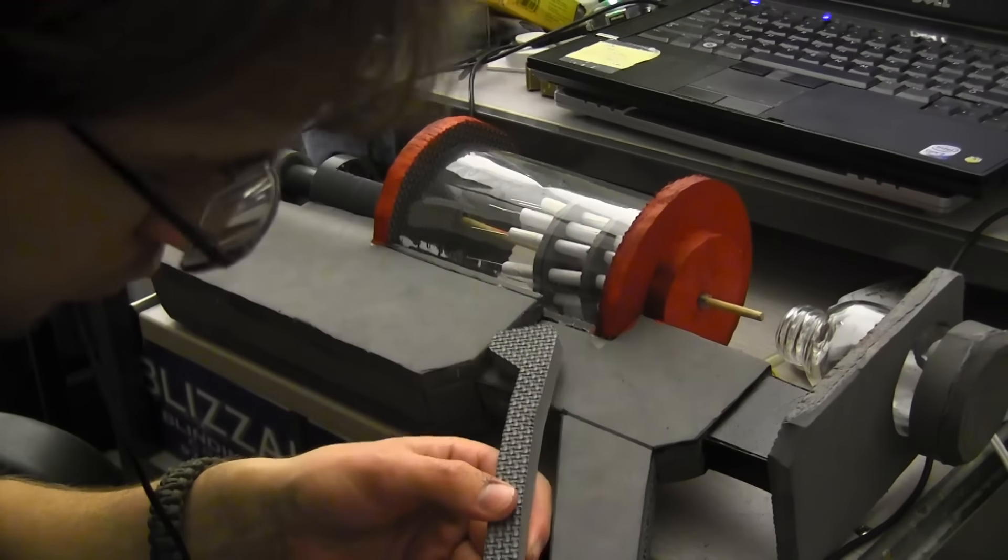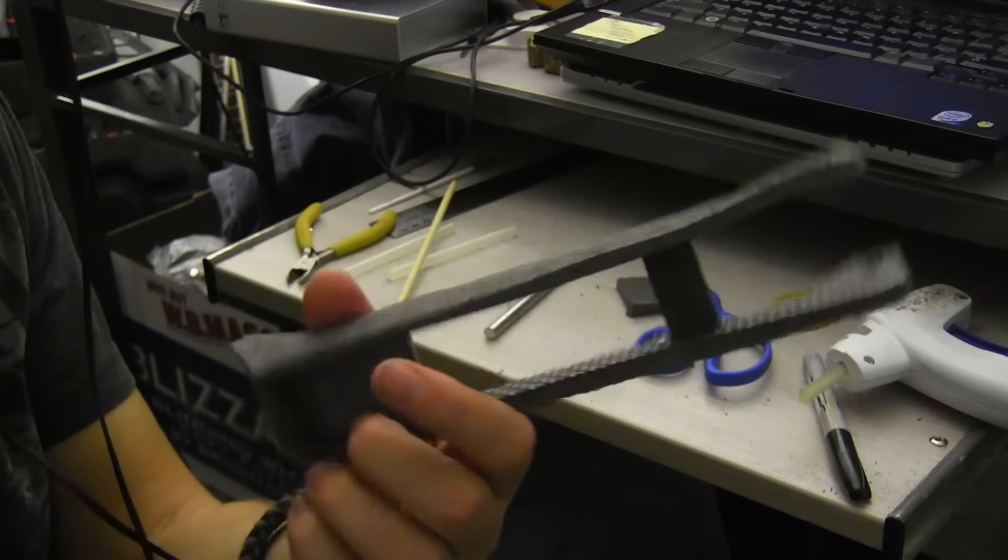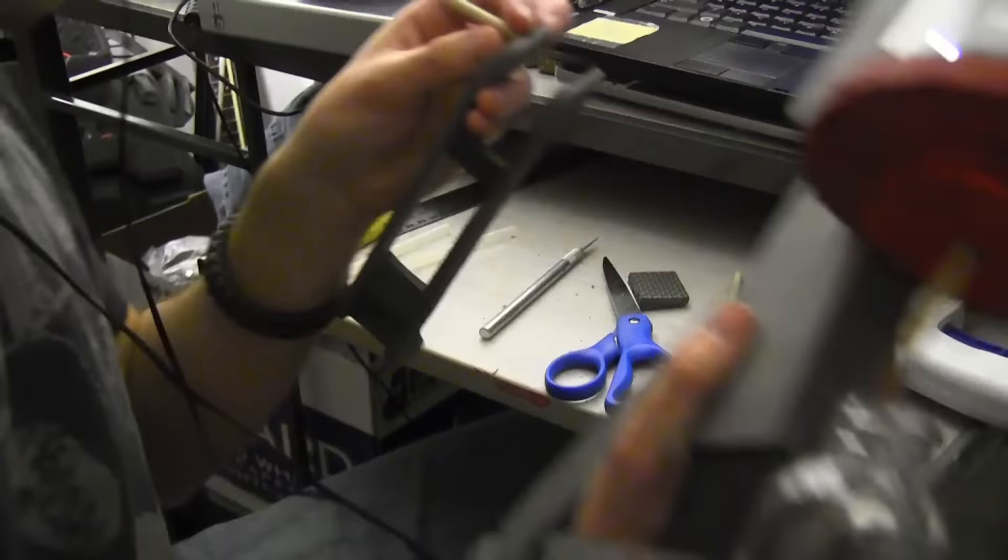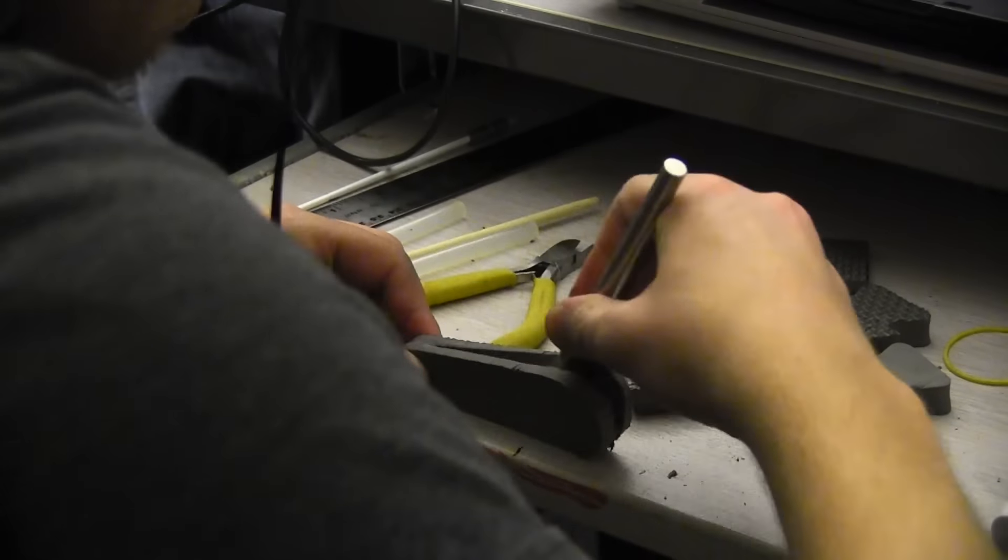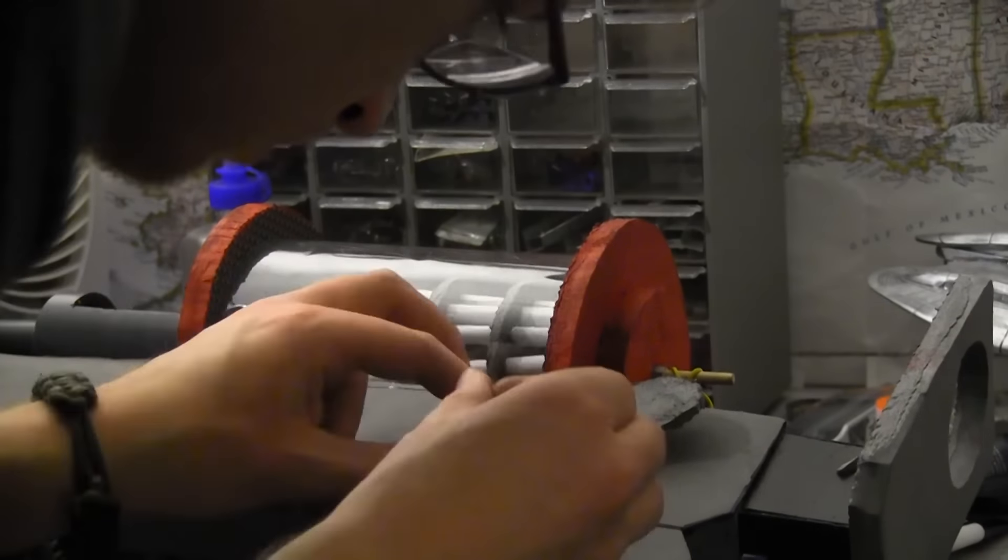Make the handle out of scrap EVA. I was going to use metal for this, but then I didn't. Use a chopstick and the spring from the pen to make the trigger move correctly. Make the rest of the trigger structure, which makes no logical sense by the way, out of scrap EVA foam.